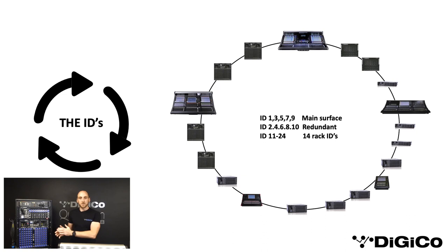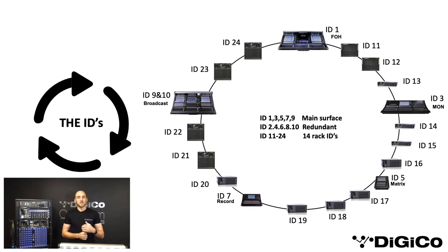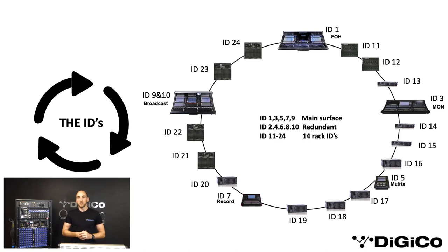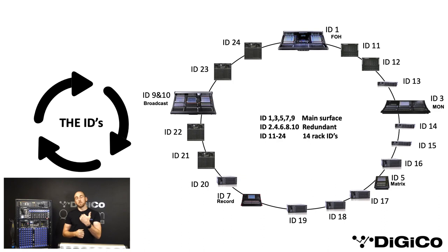So if you only have one console and a stage box, you will be looking to assign an odd number. Only use the even number if you have a redundant engine, like you would be thinking about using for a Quantum 7. As you will see on screen, IDs are populating across the consoles: the Quantum 5 will have ID number 1, the SD10 will have ID number 3, SD11 will have ID number 5, the SD9 will have ID number 7. Remember, these are single-engined consoles, so there's no even number associated with them. But we get to the Quantum 7 at broadcast — the Quantum 7 has two engines installed into the back of it. It is the stalwart of our industry; it has done all your big shows. We need to assign two IDs to this desk: ID number 9 and ID number 10. Engine A would be ID number 9, engine B would be ID number 10.